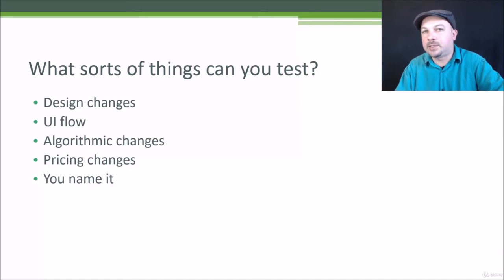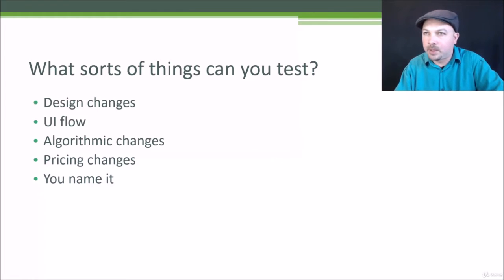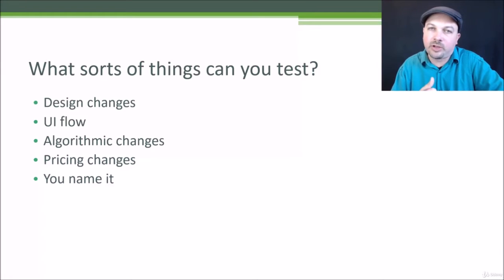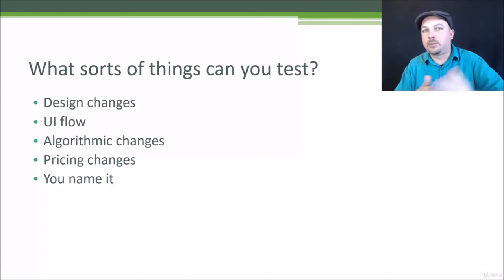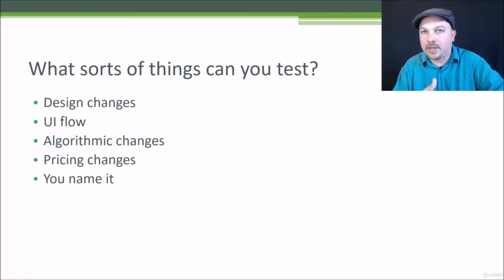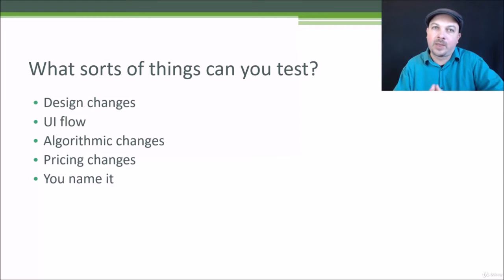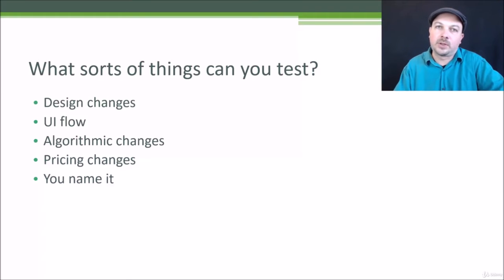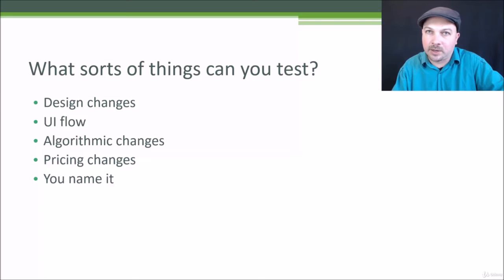You can test all sorts of things with an A/B test. Design changes like the color of a button, the placement of a button, the layout of a page — it might be a whole UI flow, like changing the way your purchase pipeline works. Algorithmic changes are another example: maybe I want to test one recommendation algorithm versus another. Instead of relying on error metrics, what I really care about is driving purchases or rentals, and an A/B test lets me directly measure the impact of this algorithm on the end result I actually care about.